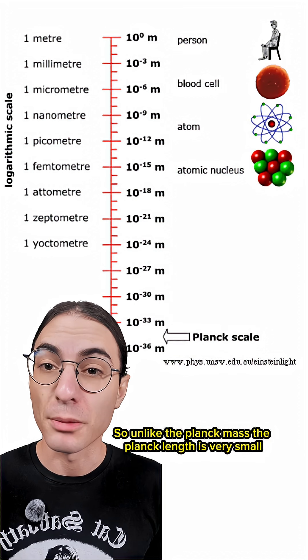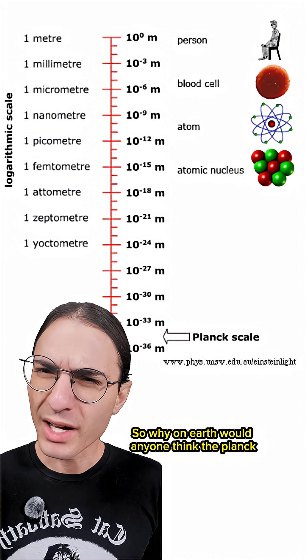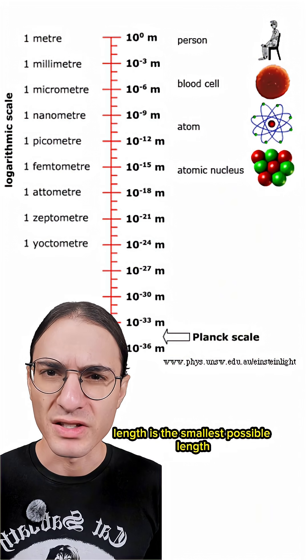So unlike the Planck mass, the Planck length is very small. But 21 micrograms isn't the smallest possible mass. So why on earth would anyone think the Planck length is the smallest possible length?